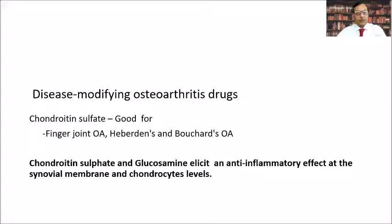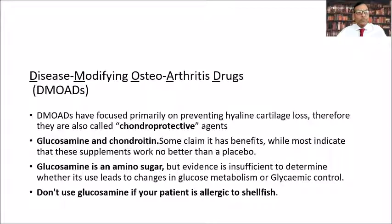There are disease-modifying osteoarthritic drugs (DMOADs) — chondroitin sulfate and glucosamine. They elicit an anti-inflammatory effect at the synovial membrane and chondrocyte levels. Chondroitin sulfate is particularly good for finger joint OA and has a better effect on Heberden's and Bouchard's nodes. DMOADs have focused primarily on preventing hyaline cartilage loss, which is why they are called chondroprotective agents. Glucosamine is an amino sugar. If the patient is allergic to shellfish, glucosamine should not be given.